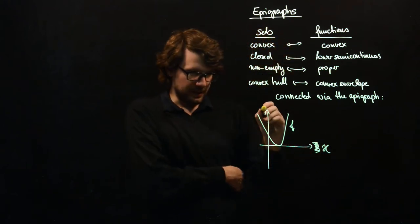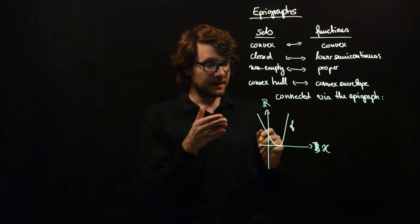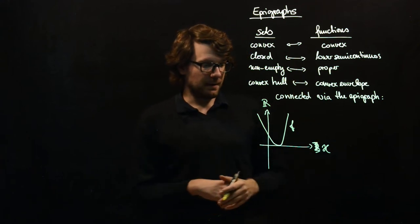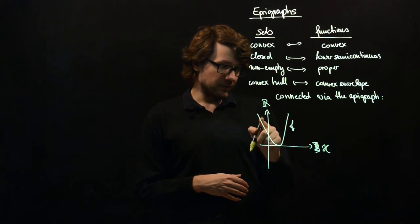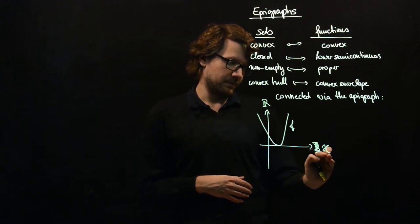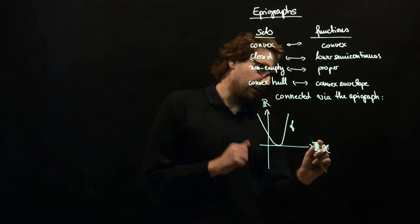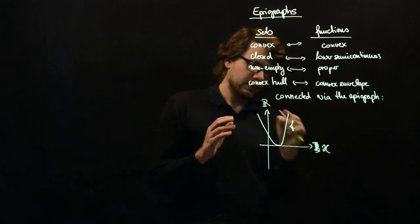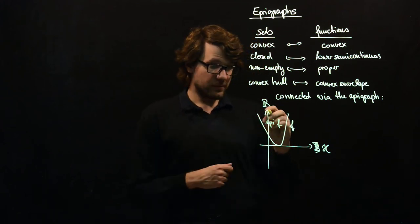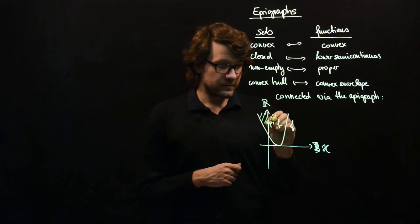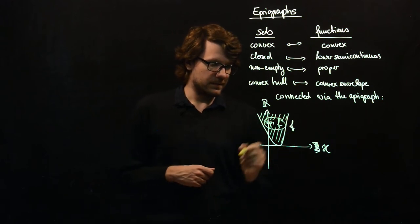We are always working in a space H and we are working with extended real values which cannot be mapped here. So you have a function here. And this is the graph of the function. The graph is an element of H times R. So it consists of pairs of elements in H and real numbers. And then you have the so-called epigraph of f, which is everything which is above the graph. So this is the epigraph.